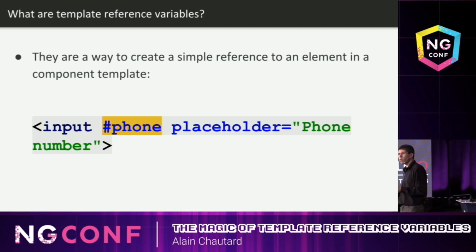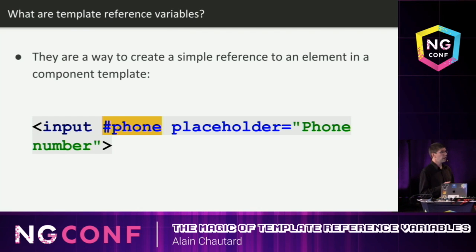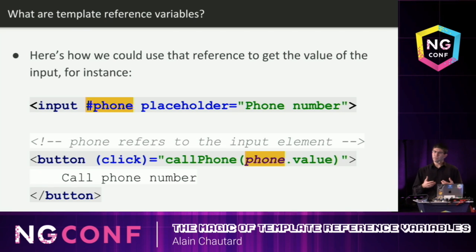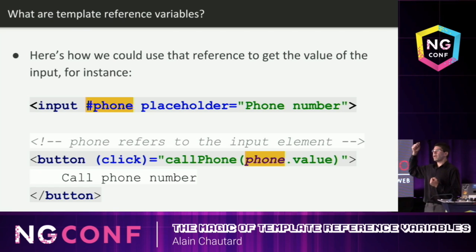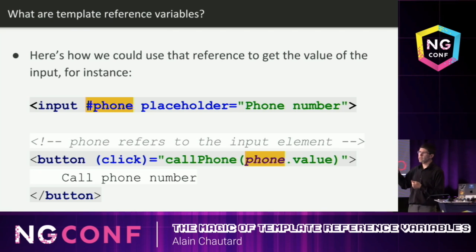Template reference variables in Angular are a way to get a reference to an HTML element. I usually call this the hashtag syntax because we just have this tiny hashtag here that we add to an element to get a reference to it. And what we can do with that is basically if I applied this to an input here, what I get is a reference to the HTML element so I can access any property like the ID, the CSS classes, the value, anything you like. In this example, I'm basically getting the value of that input and passing it to my component whenever we click a button. So because of this, I don't need any data binding in my component. I don't need any ng-model. Everything just happens in the template.